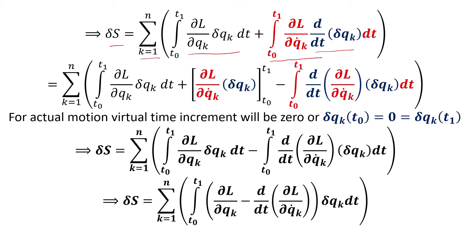For the second integration, we apply integration by parts. We take (∂L/∂q̇k) as the first function and d/dt(δqk) as the second function. This gives us first function times integration of second from t0 to t1, minus the integration of differentiation of first times integration of second from t0 to t1.